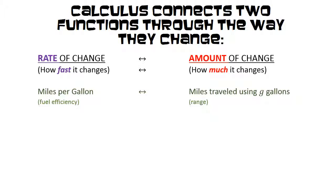The amount of change is the number of miles traveled when we use some number of gallons g. Dollars per hour, which is our pay rate, that's a rate of change. And the amount of change is the number of dollars that we earn working for h hours.